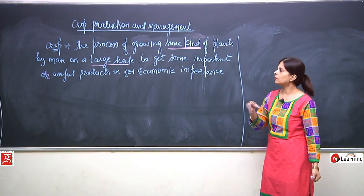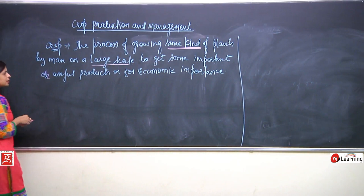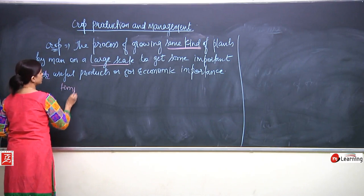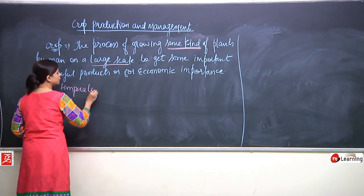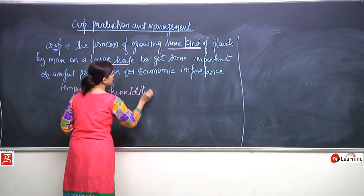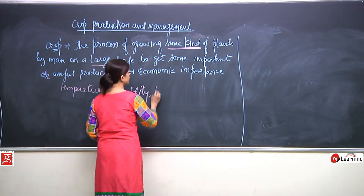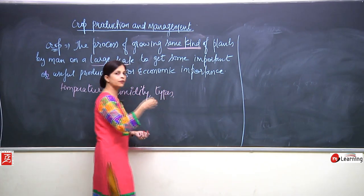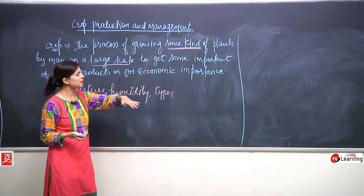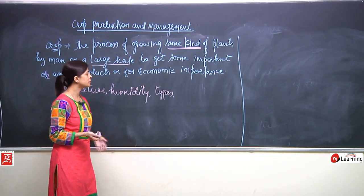On the basis of certain factors, crops can be divided into many parts. It can be on the basis of temperature, on the basis of humidity, or on the basis of types like cereals, pulses, dals, vegetables, oilseeds, and beverages. We are going to study all of that.